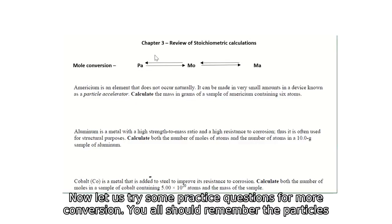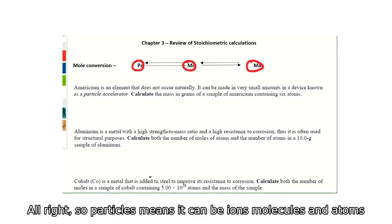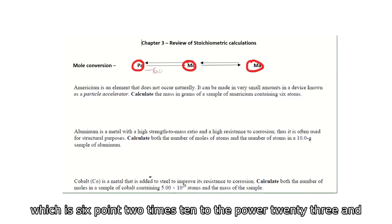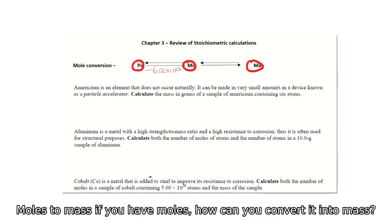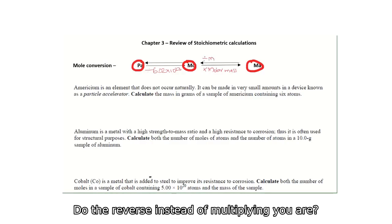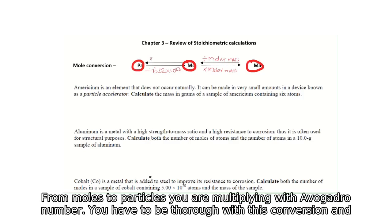Let us try some practice questions for moles conversion. You should remember the particles-moles-mass conversions and their reverses. Particles can be ions, molecules, and atoms. To convert particles to moles, divide by Avogadro's number, which is 6.02×10²³. To convert moles to mass, multiply by molar mass. For the reverse — mass to moles — divide by molar mass, and moles to particles, multiply by Avogadro's number.